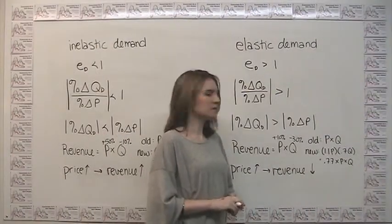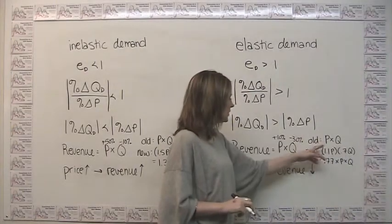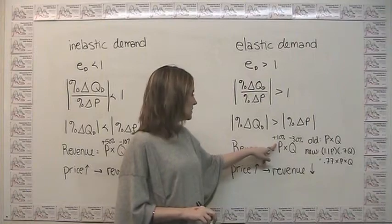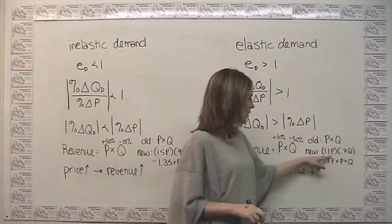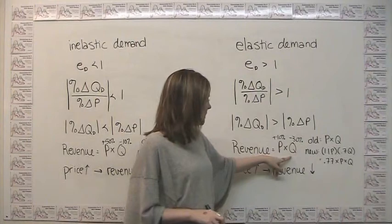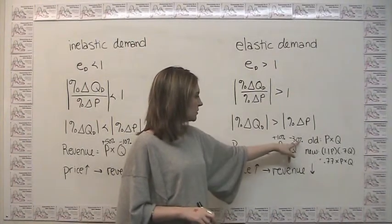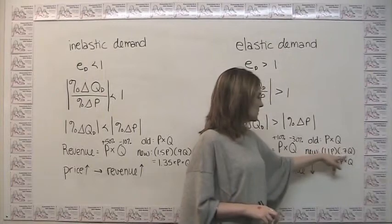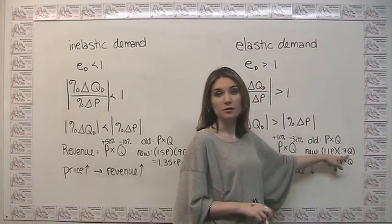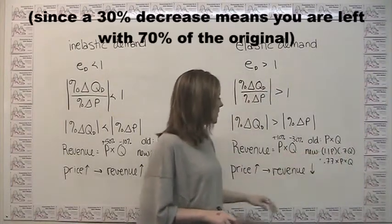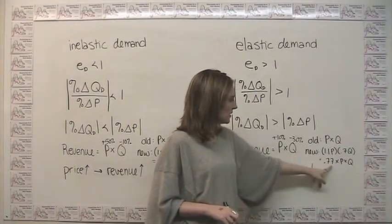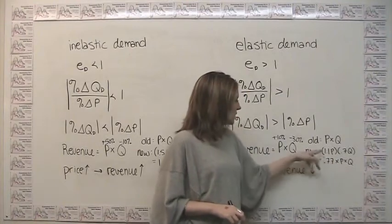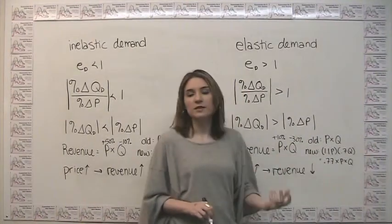Again, our revenue starts with some arbitrary price and quantity. And we say if our price goes up by 10%, this P becomes 1.1 times P. And if in response, our quantity demanded goes down by 30%, then our Q becomes 0.7Q. If we multiply this out, we see that our new revenue is 0.77 times price times quantity. So we're multiplying the old revenue by something that's less than 1.